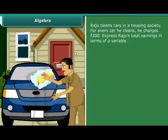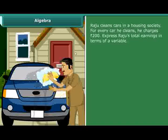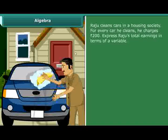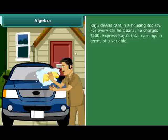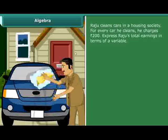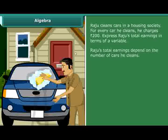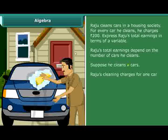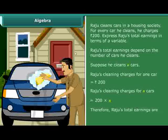Raju cleans cars in a housing society. For every car he cleans, he charges 200 rupees. Express Raju's total earnings in terms of a variable. Raju's total earnings depend on the number of cars he cleans. Suppose he cleans N cars. Raju's cleaning charges for one car is 200 rupees. Raju's cleaning charges for N cars is equal to 200 into N. Therefore, Raju's total earnings are 200N rupees.